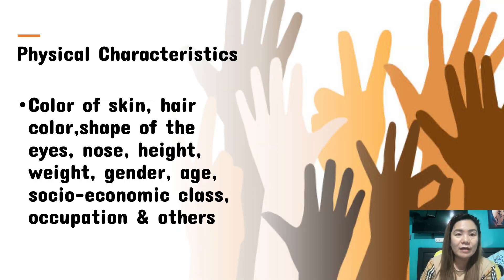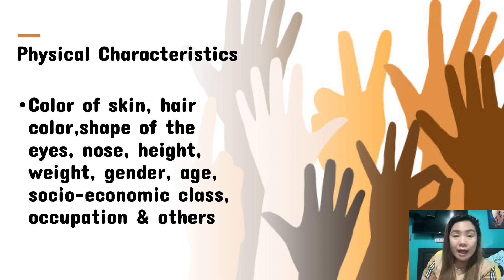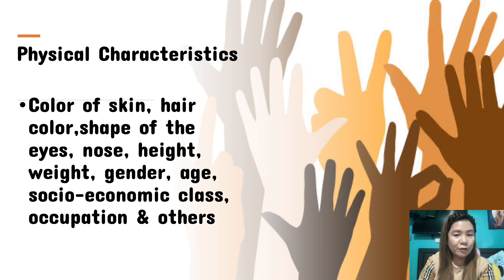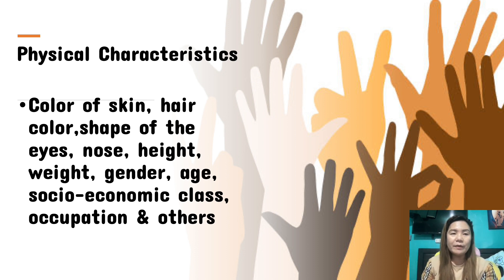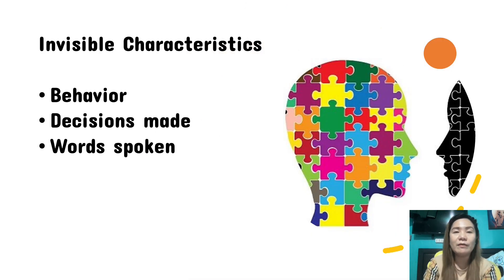Number one is physical characteristics. We are different individuals because of the color of our skin, our hair color, the shape of our eyes, our nose, our height, weight, gender, age, socioeconomic class, occupation, and others. So we are different in these many ways — kahit sabihin mo parehas sila ng manggi, pero hindi naman parehas sila ng size ng ilong. Walang talagang magkaparehas. Even if two individuals are exactly the same in physical characteristics, they will still be different because of invisible characteristics — behavior, decisions made, words spoken.